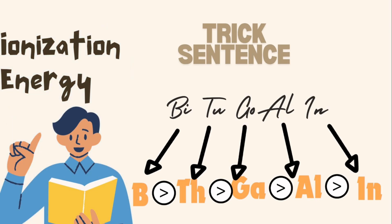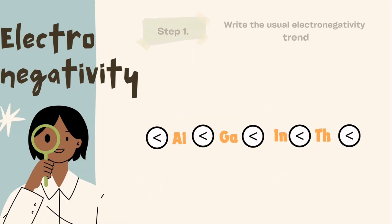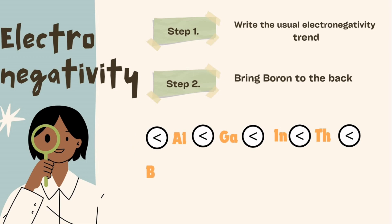The next topic is electronegativity. Step one is to write the usual electronegativity trend — the general one, going from left to right and bottom to top, electronegativity increases in the periodic table. Step two is bringing back boron. You will then have the correct electronegativity sequence where boron is the most electronegative and aluminium is the least.